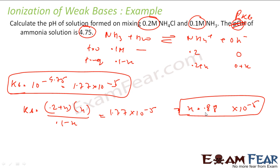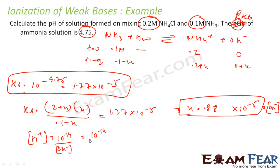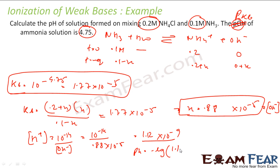Since x is the OH⁻ ion concentration, [OH⁻] = 0.88 × 10⁻⁵. Then [H⁺] = 10⁻¹⁴ / (0.88 × 10⁻⁵) = 1.12 × 10⁻⁹. So pH = −log(1.12 × 10⁻⁹) = 8.9.